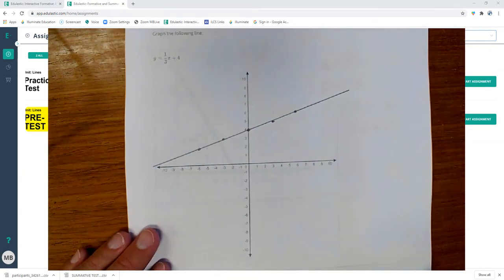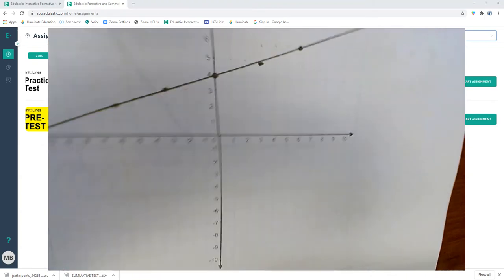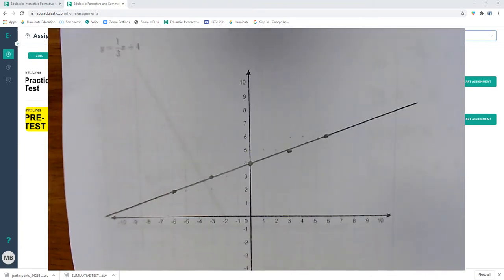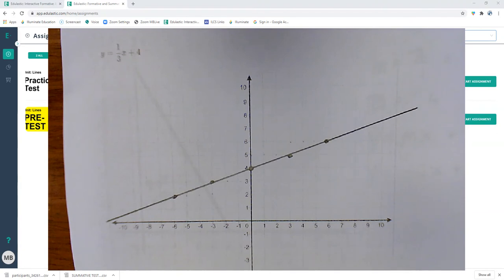Graph the following equation, zoom in a little bit here. The equation says to start at four, so I start at four and then I go up one over three—one, two, three, up one over three, up one over three.